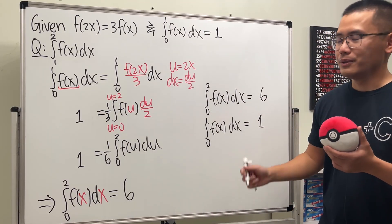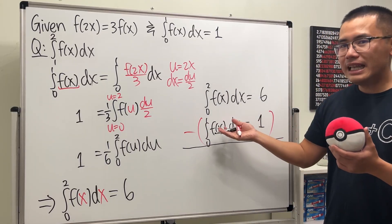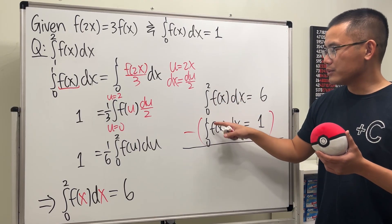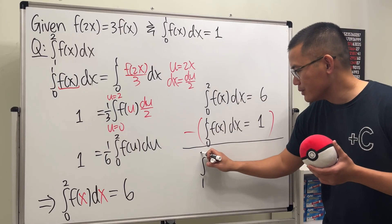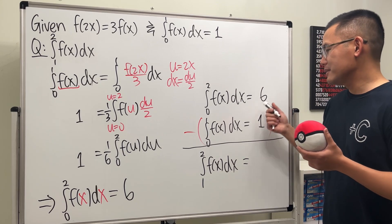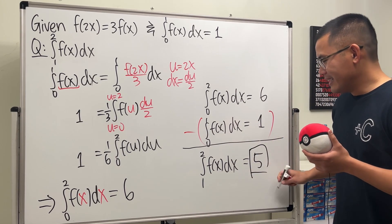Guess what we are going to do? Yeah. Just go ahead and subtract. And ladies and gentlemen, on the left-hand side, when we go from 0 to 2 and then subtract from 0 to 1, this right here will give us the integral going from 1 to 2. And then we have f of x. And then on the right-hand side, it's just 6 minus 1. We get 5. And that's it. Ta-da! That's the answer. 5.